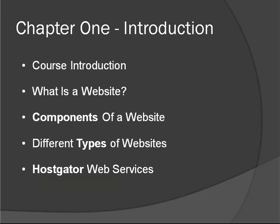Now let's get to chapter one, which will basically just be an introduction — the course introduction, which is what we're doing now. We'll talk about what a website is, what components go into a website such as the domain name and hosting. We'll talk about the different types of websites, from static HTML to dynamic websites like WordPress and Joomla, and then we'll talk about HostGator web services, including what's offered there as far as domain names and hosting.